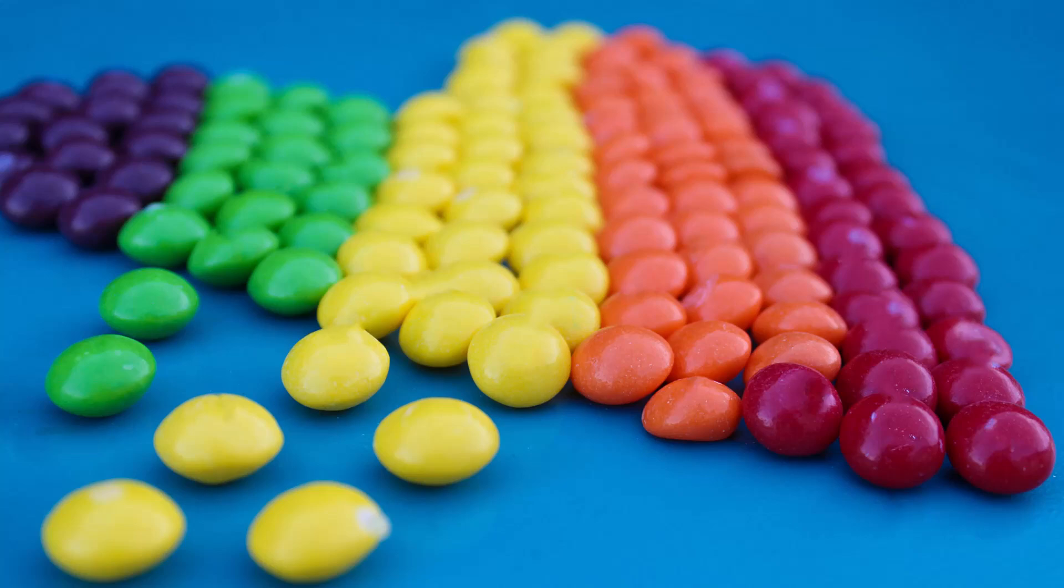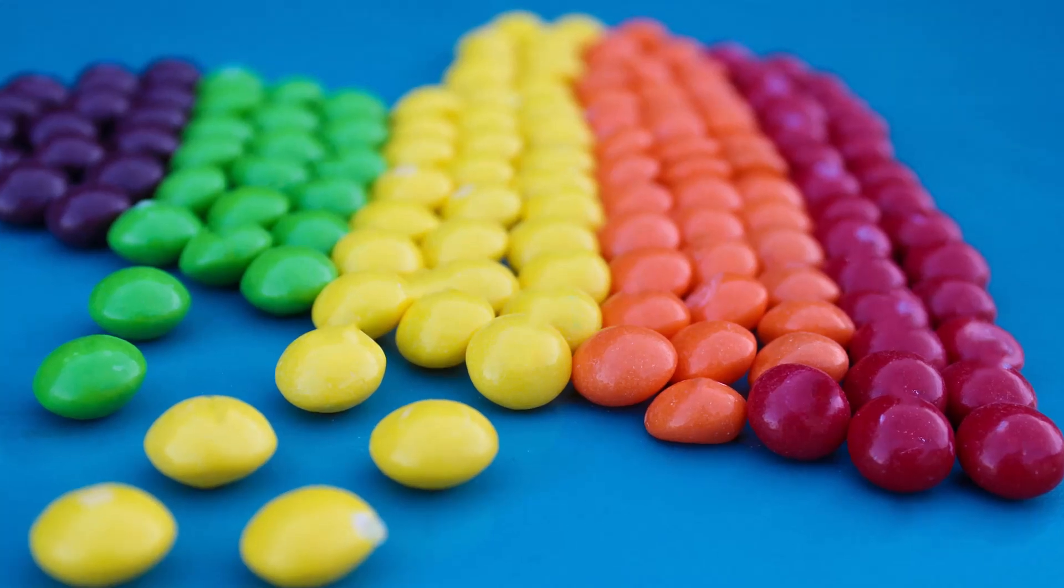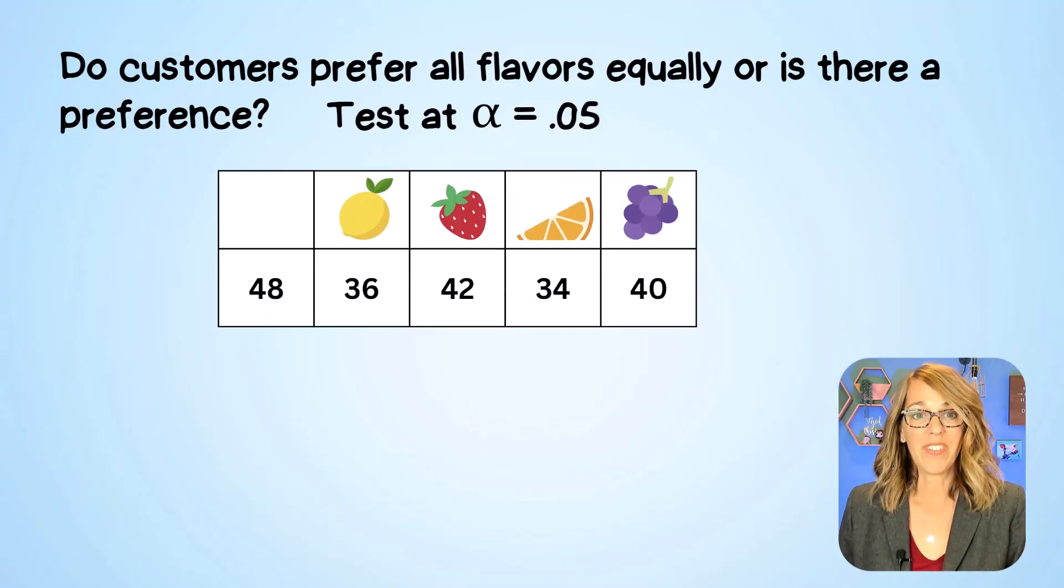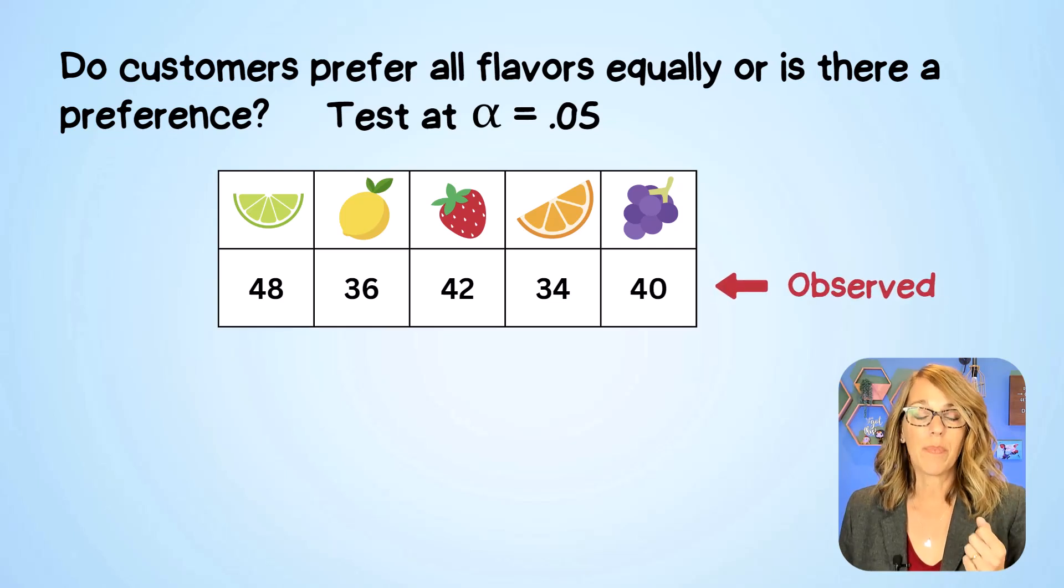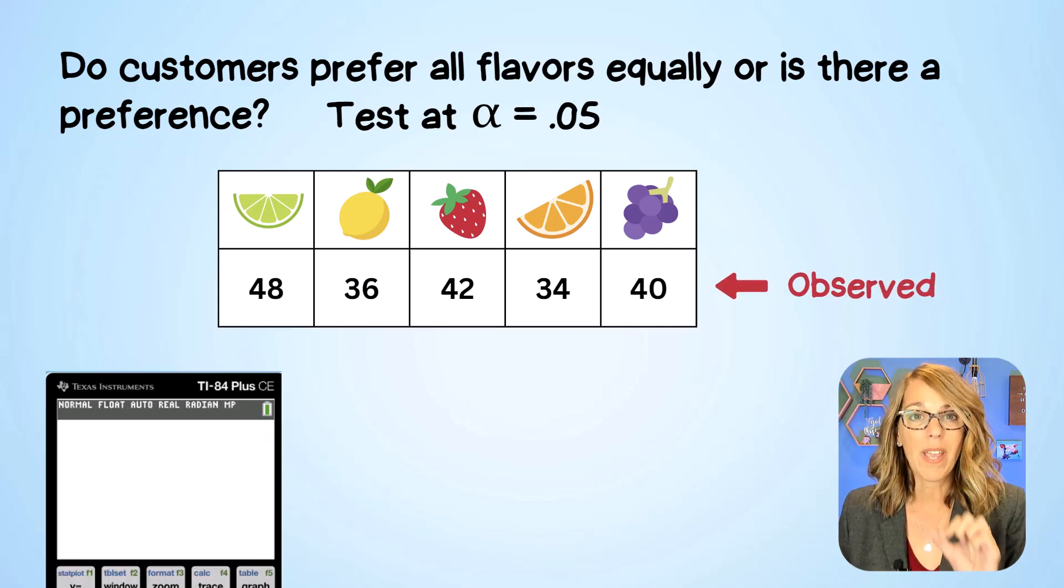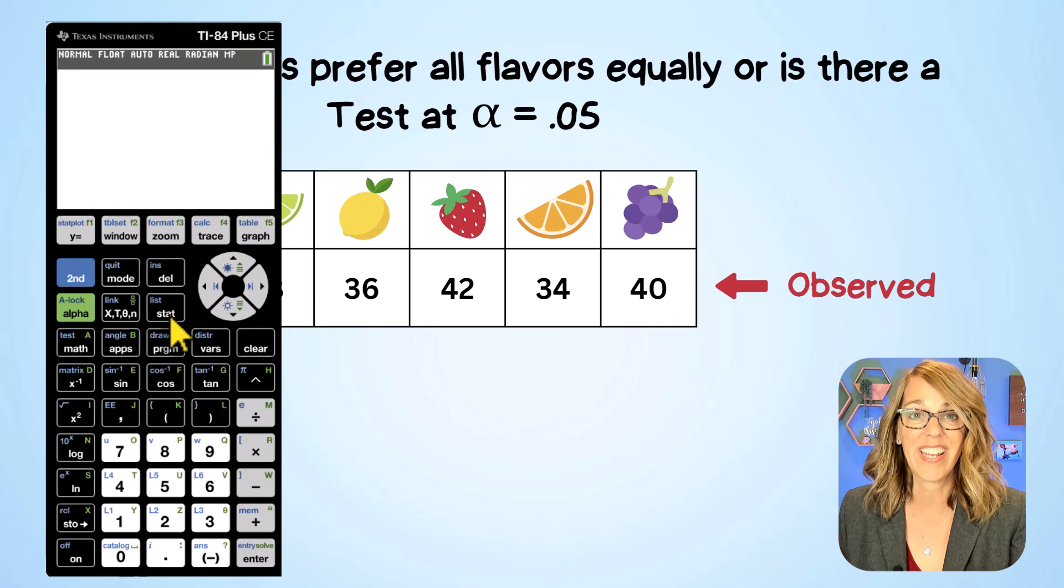The TI-84 does a great job with a goodness of fit test like this one. We want to know if customers show a preference for one candy more than others. We came up with this data for five different flavors. Now this is our observed data and we're going to start by entering this into the TI-84.